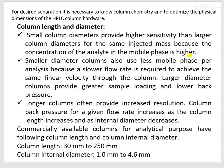With a small diameter column compared to a larger diameter column, the sensitivity obtained with a small diameter column is very high, because in a small diameter column, less volume of mobile phase is used, and because of that, the injected sample will not be as diluted as in a large column diameter where the volume of mobile phase is more. Hence, you will get good sensitivity with a small diameter column. Small diameter columns also use less mobile phase per analysis because a slower flow rate is required to achieve the same linear velocity through the column.